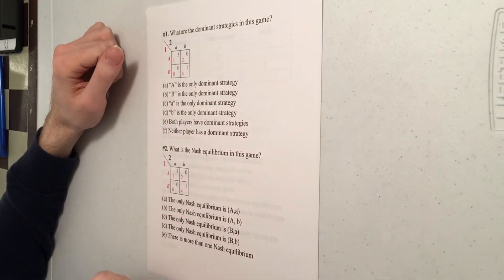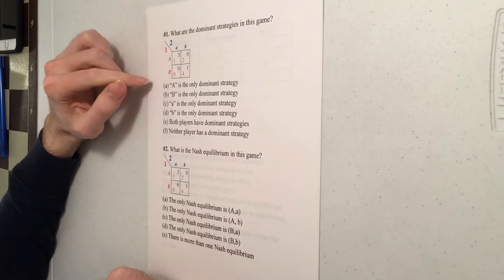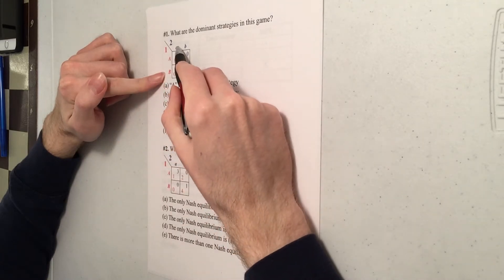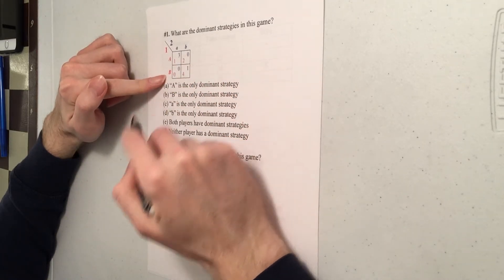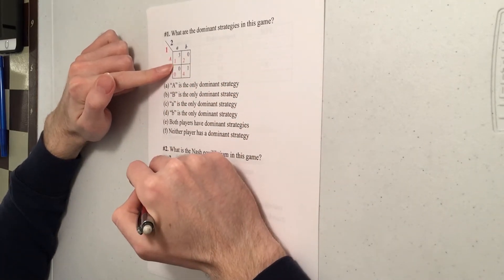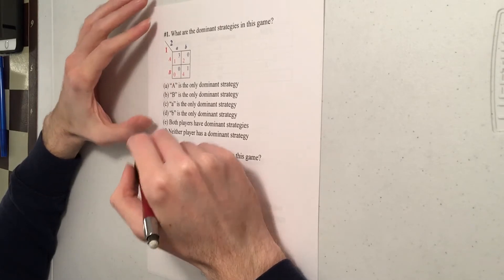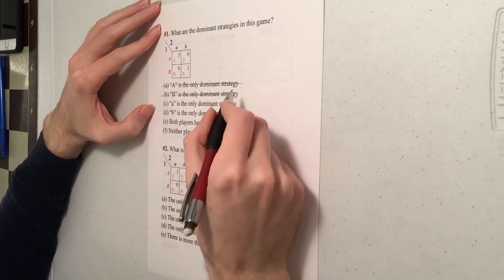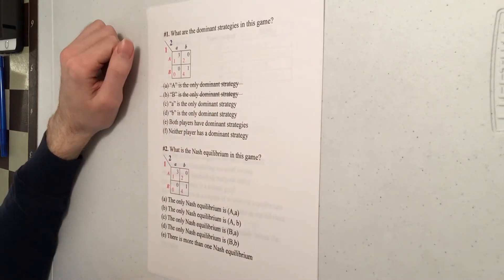So A is not dominant. Big A is not dominant. Big B is also not dominant. That's because if player two is playing little a, it's better to play big A and get one than play big B and get zero. So you're going to rule out big A and big B from being dominant strategies.